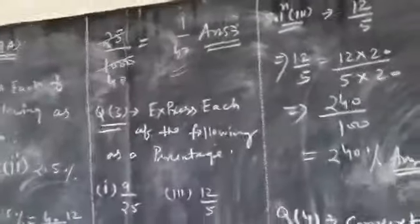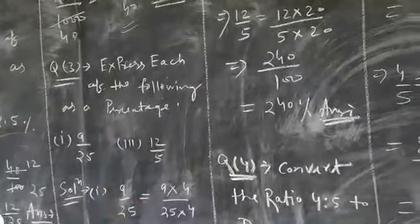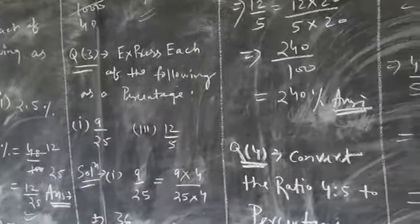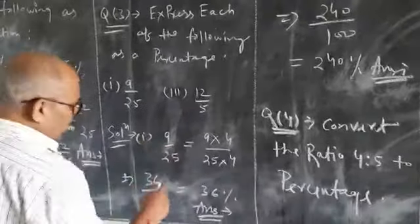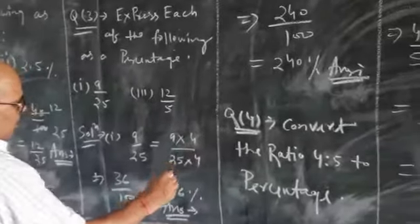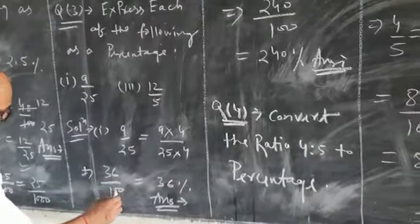Question 2: Express each of the following as a percentage. First, 9 upon 25. Therefore, 9 upon 25 is equal to 9 into 4 upon 25 into 4, that will be equal to 36 upon 100, and it can be written as 36 percent.